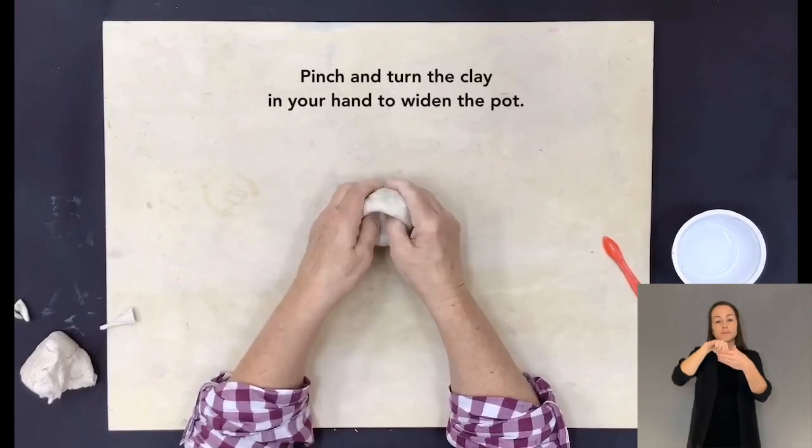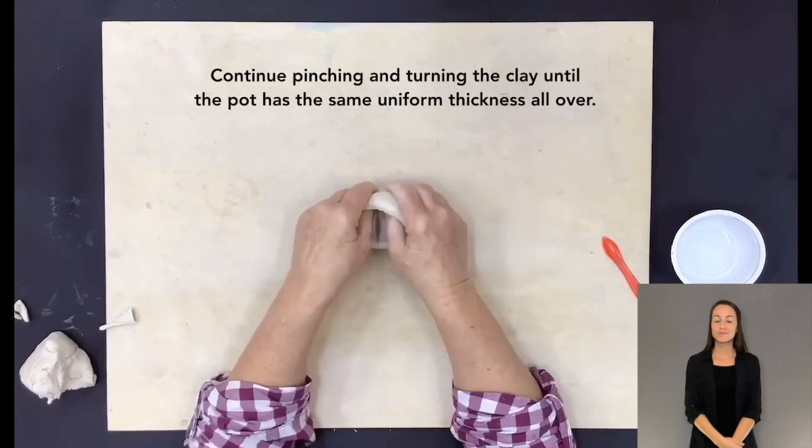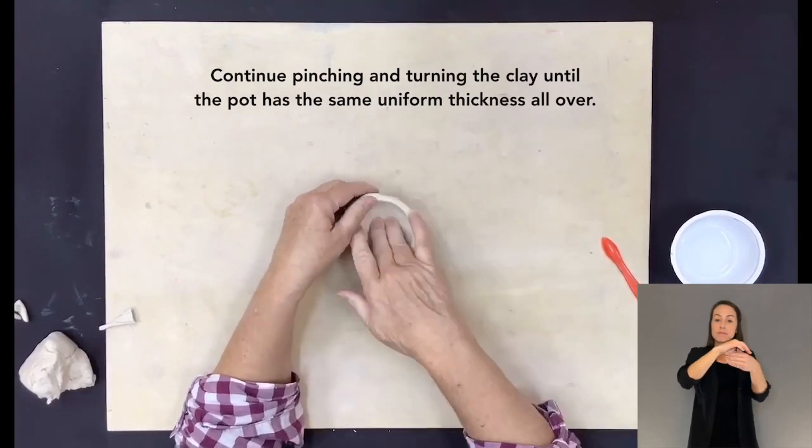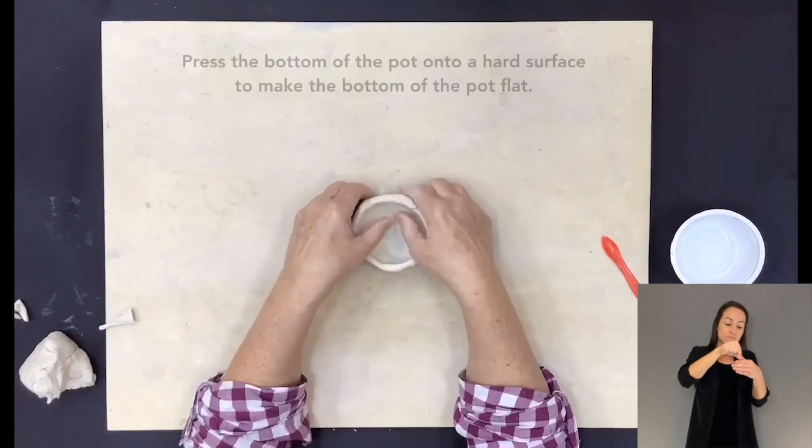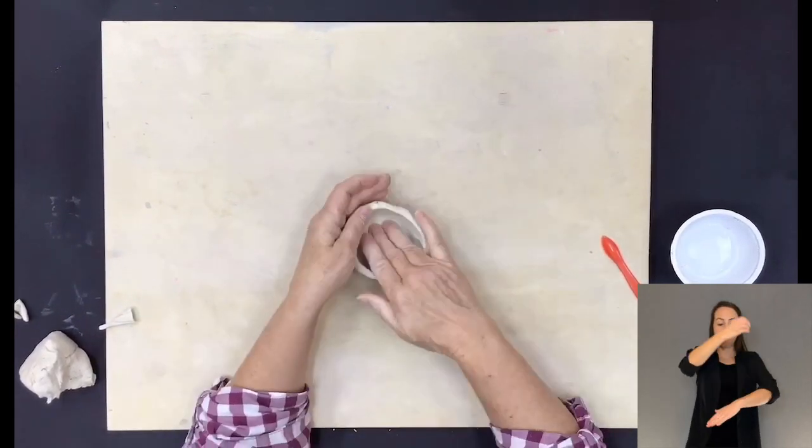Pinch and turn the clay in your hand to widen the pot. Continue pinching and turning the clay until the pot has the same uniform thickness all over. Press the bottom of the pot onto a hard surface to make the bottom flat.